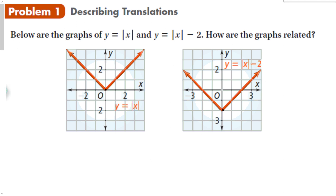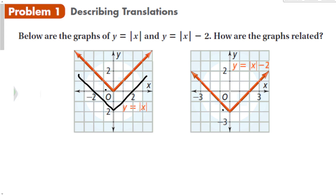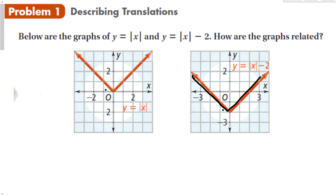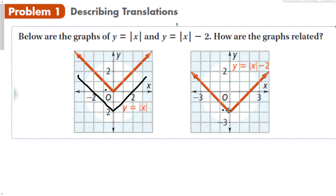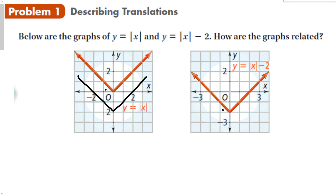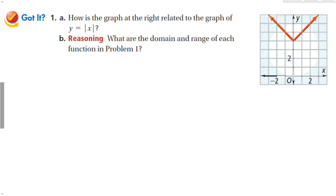If I were to take the parent graph, pick it up, and shift it down 2, I would then get that second graph. So shifting down 2 gives us that function on the right. Looking at another graph, it's shifted up 1, 2, 3, 4 — so this graph is shifted up 4.